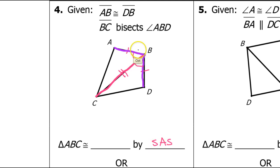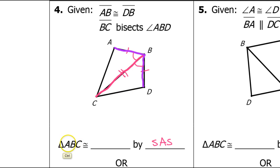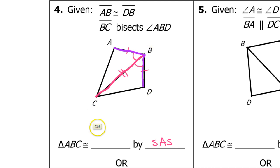Angle B does correspond with angle B for both triangles — you can tell because of the way they're marked. So triangle ABC is congruent to triangle DBC.